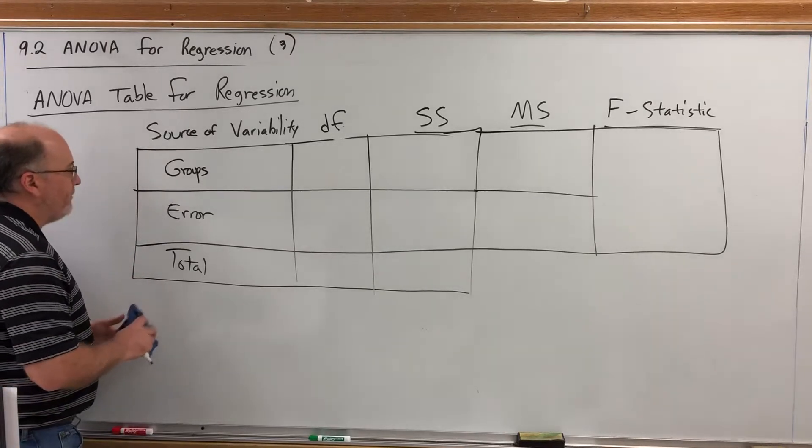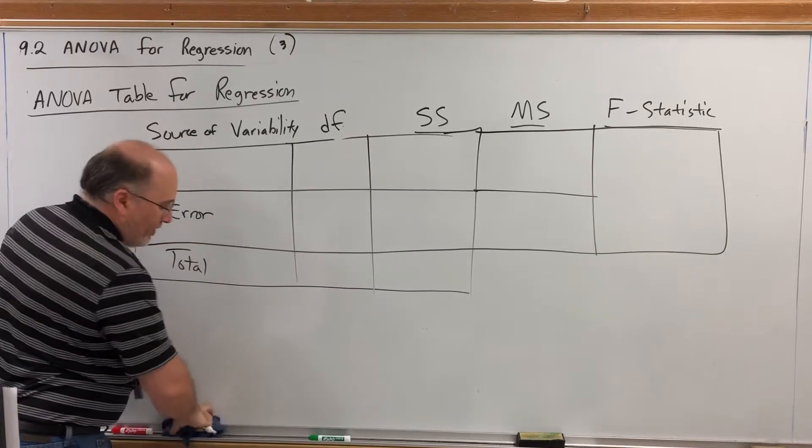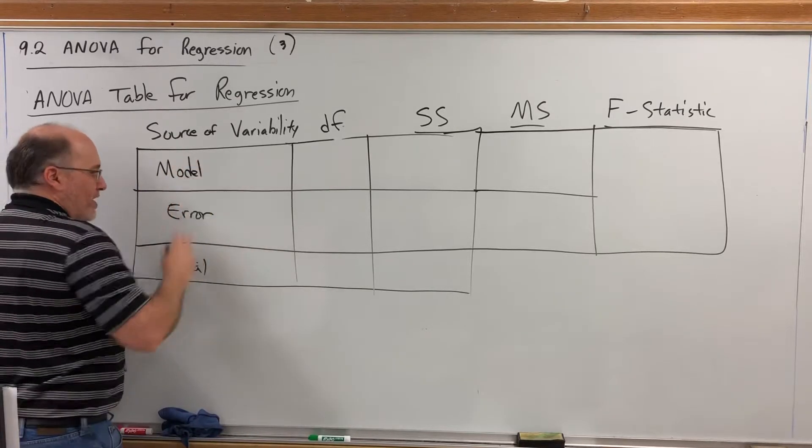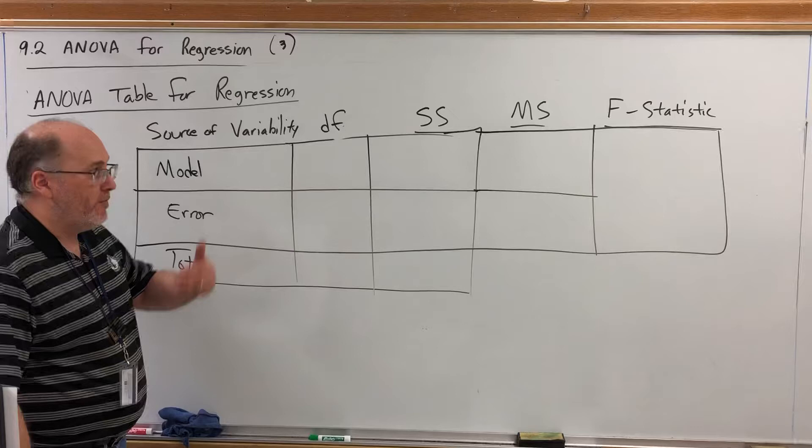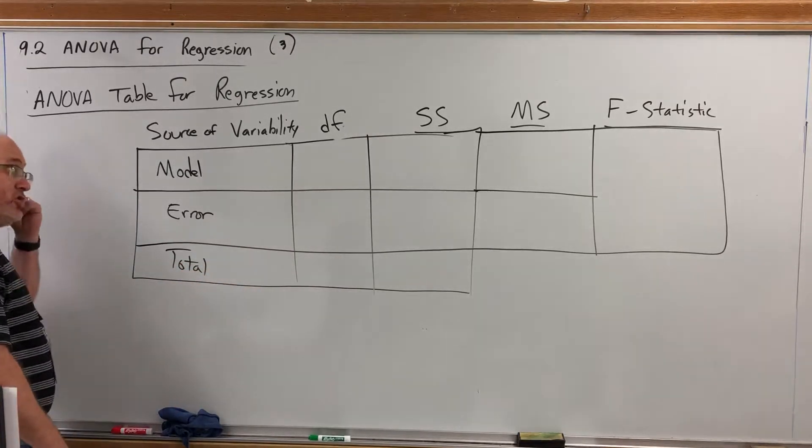First off we're no longer going to call it the variability in groups but rather the variability invoked by the model. And again when I say the model I mean the equation. So the beta 0 plus beta 1 X part of the population regression model.